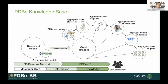Overall, what we want to achieve is a comprehensive integrated infrastructure for structural data and annotations — bringing together theoretical models and experimental models through the 3D Beacons network, aggregating all annotations into a knowledge graph, so that users can benefit from all the structural information available.